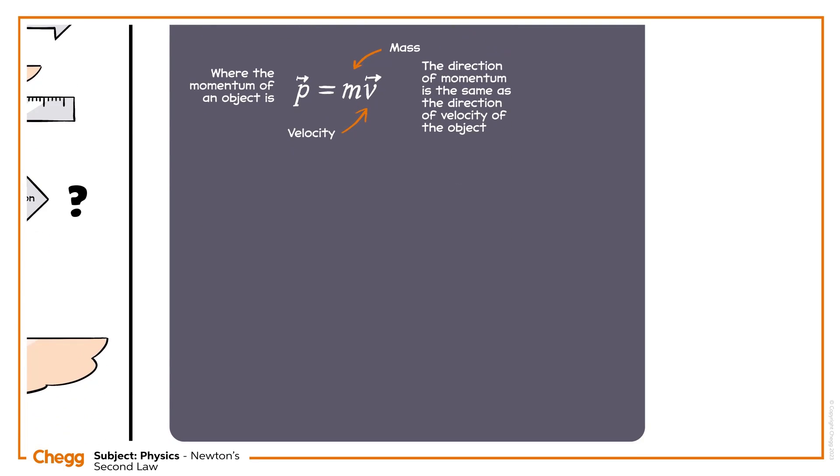Then the rate of change of momentum will be dp/dt = m(dv/dt). Here, the term dv/dt represents the rate of change of velocity with time, which is nothing but the acceleration.